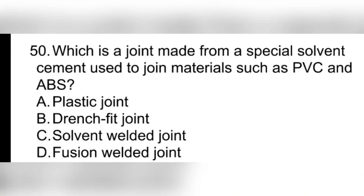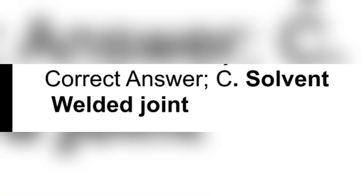Question 50. Which is a joint made from a special solvent cement used to join materials such as PVC and ABS? A. Plastic joint. B. Drench fit joint. C. Solvent welded joint. D. Fusion welded joint. Correct answer: C. Solvent welded joint.